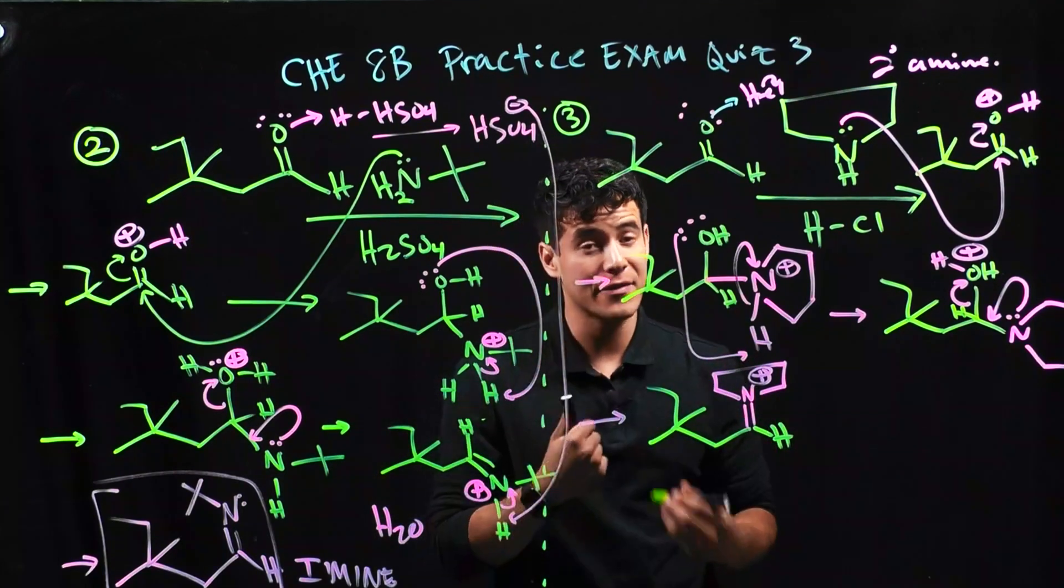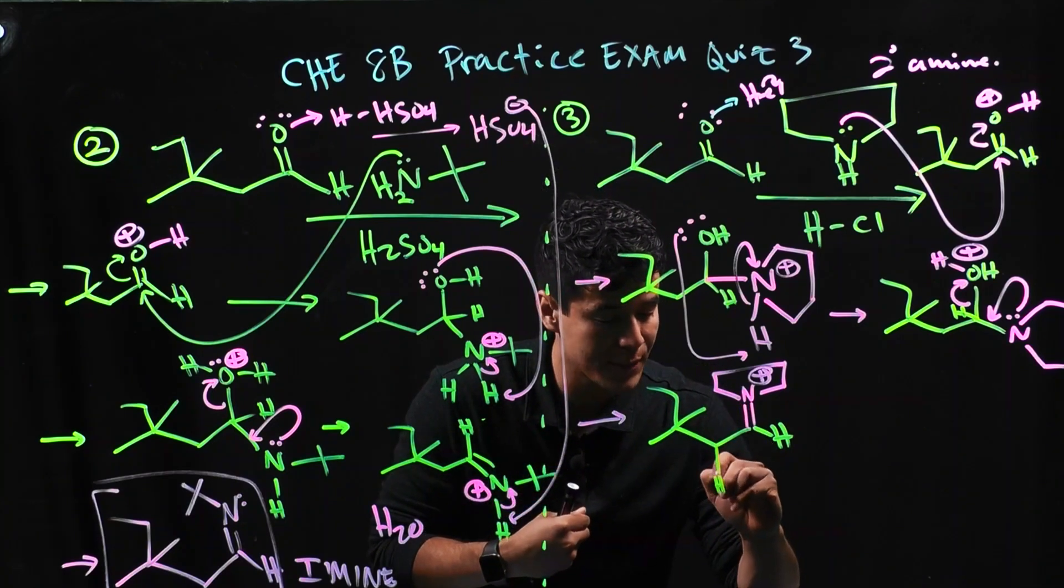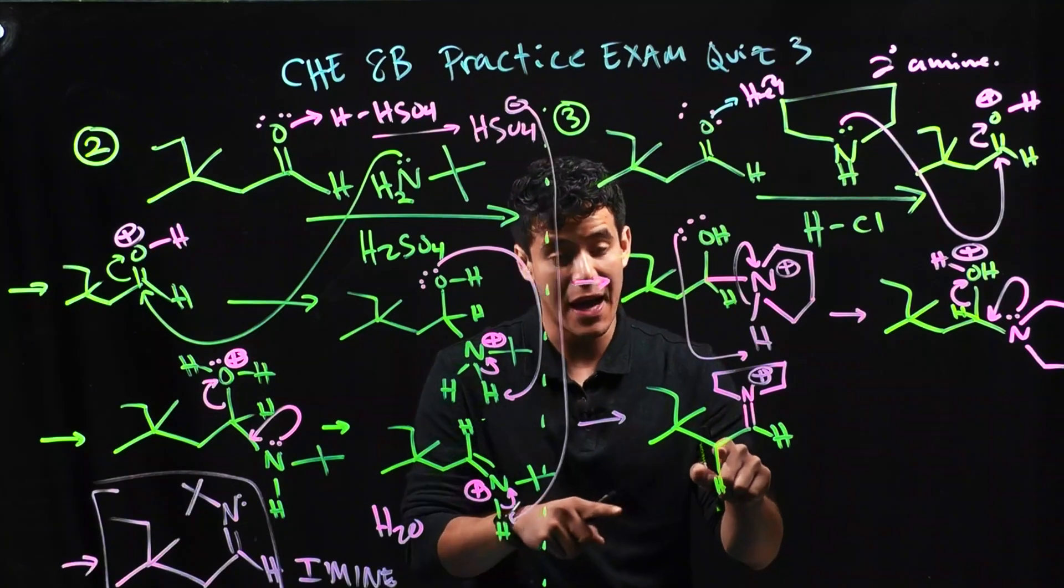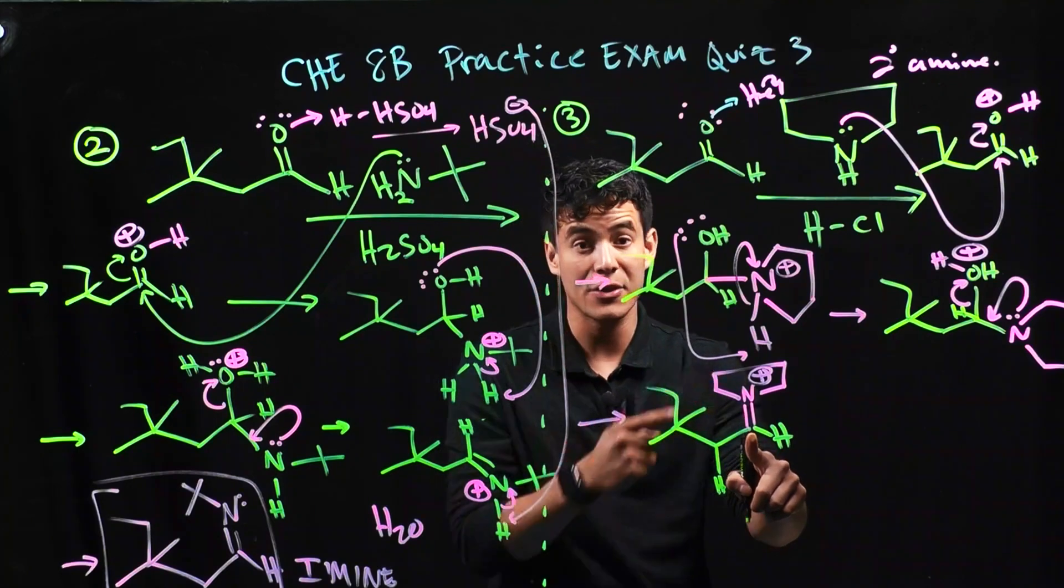What we do have that can give up something is something we call an alpha hydrogen. Alpha simply means next door. This hydrogen is on the alpha carbon, alpha to our carbon with the nitrogen group.